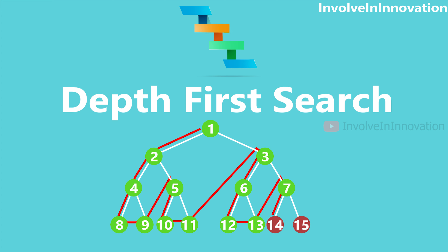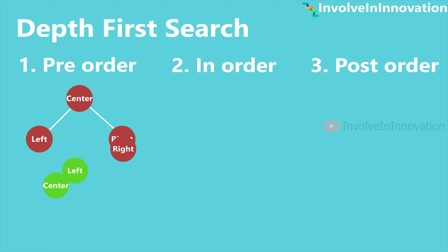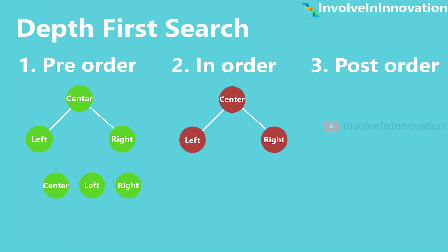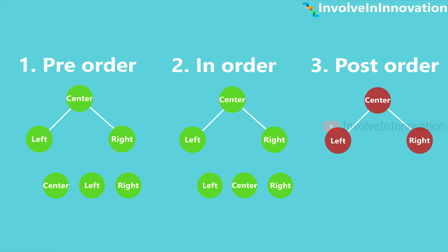We will see what are the three types of tree traversal algorithms in depth first search. They are pre-order, in-order, and post-order. These types are classified based on the position of the center node, also known as the root node. If the center node is placed before left and right node then it is pre-order. If placed in between, it is in-order. If placed after, it is post-order traversal.